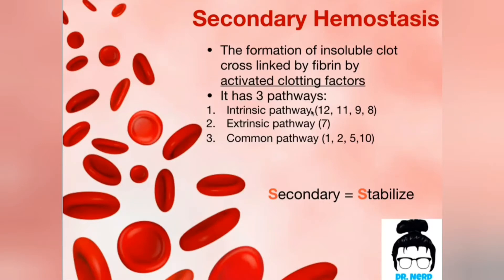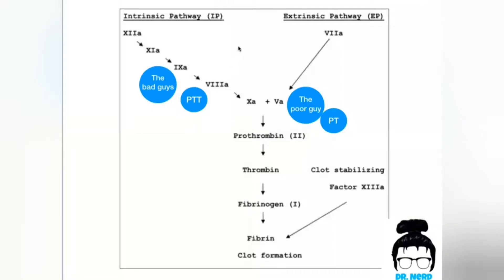Secondary hemostasis has three pathways: intrinsic pathway, extrinsic pathway, and common pathway. The intrinsic pathway and extrinsic pathway join together in order to lead us to the common pathway. Here is the intrinsic pathway, here is the extrinsic pathway, and here is the common pathway, where the end product is fibrin, the stabilizer.